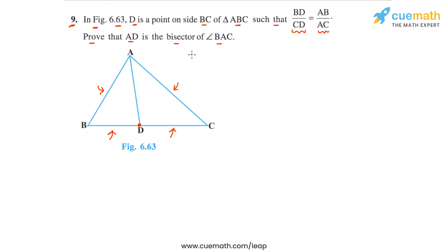If you think carefully, this question is actually simply the converse of the angle bisector theorem. The angle bisector theorem says that any angle bisector divides the opposite side in the ratio of the sides containing the angle. In this problem, we are given that the two ratios are equal — the ratio in which BC is divided is the same as the ratio of the sides containing angle A — and we have to prove that AD is the bisector of angle BAC.